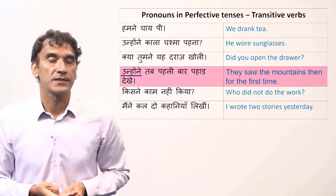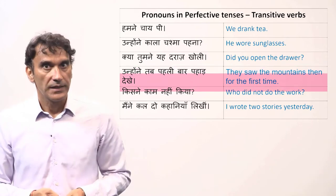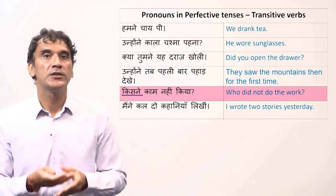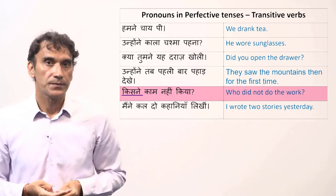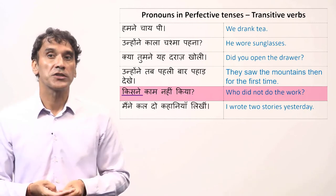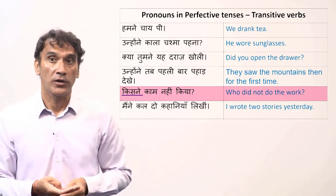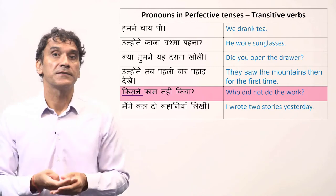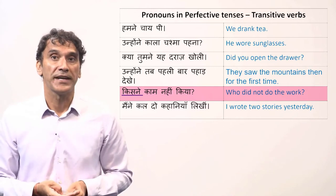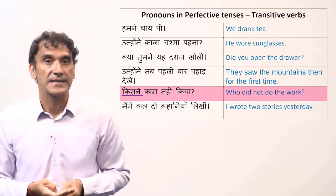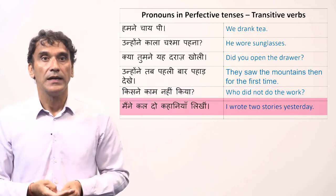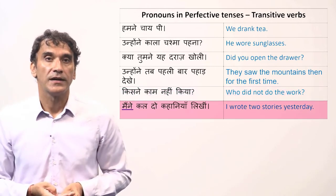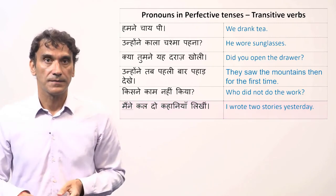'Kisne kaam nahi kiya?' — who did not do the work? The question word is 'kaun' (who), but with the postposition 'ne' it becomes 'kisne'. 'Maine kal do kahaaniyaan likhi' — I wrote two stories yesterday.